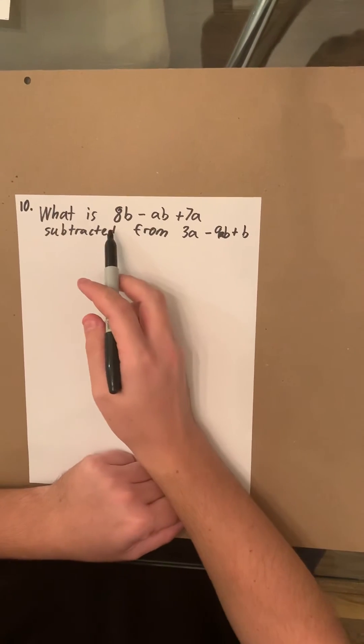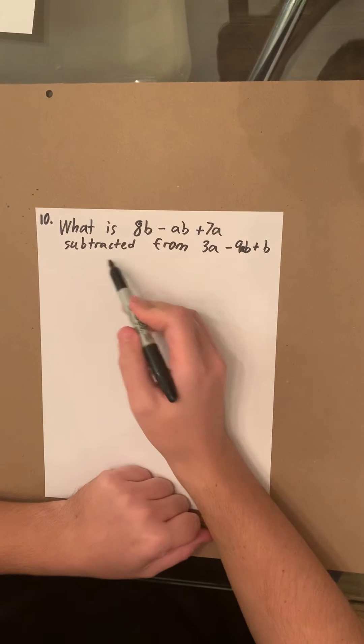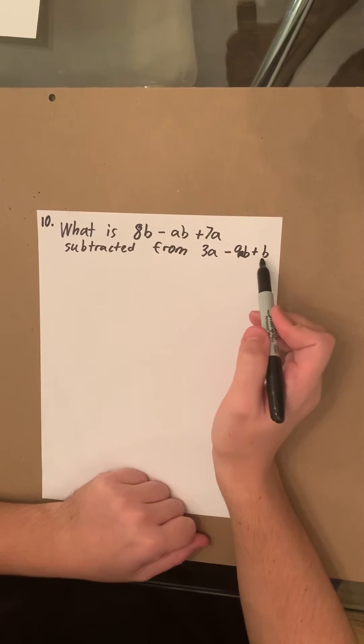For number 10, it asks what is 8B minus AB plus 7A subtracted from 3A minus 9AB plus B?